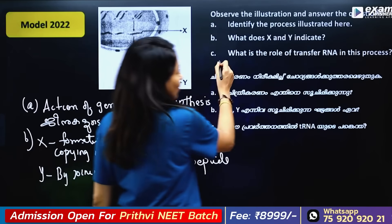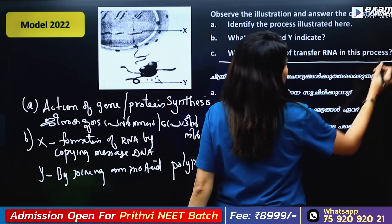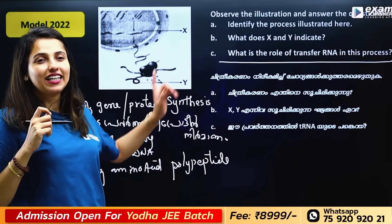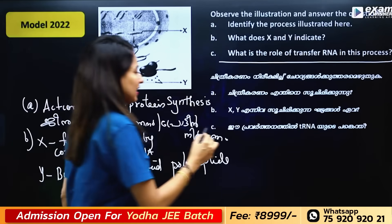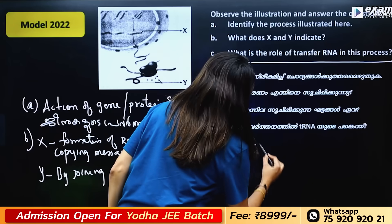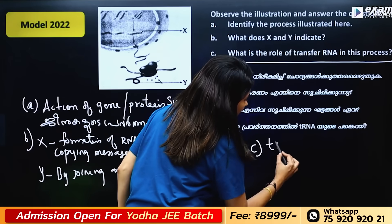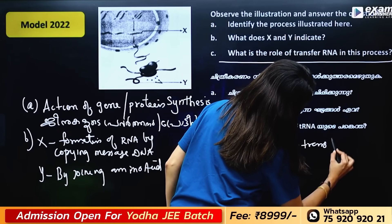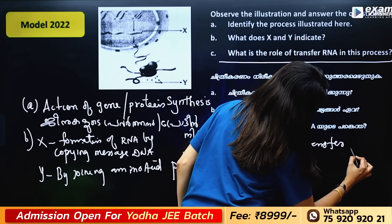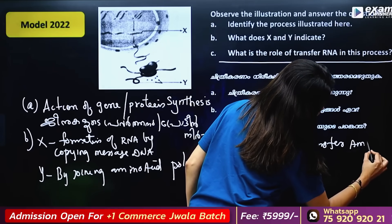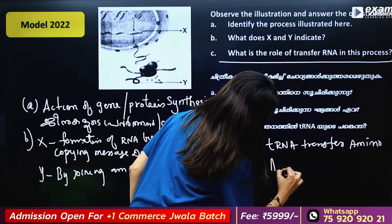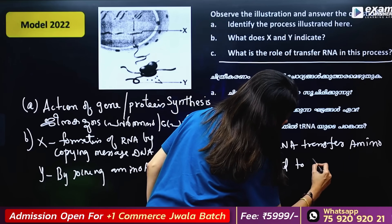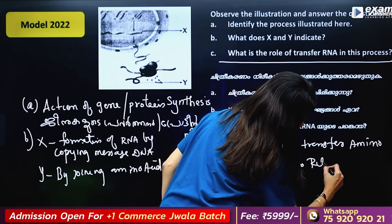What is the role of transfer RNA in this process? Transfer RNA transports amino acids to the ribosome for protein synthesis.